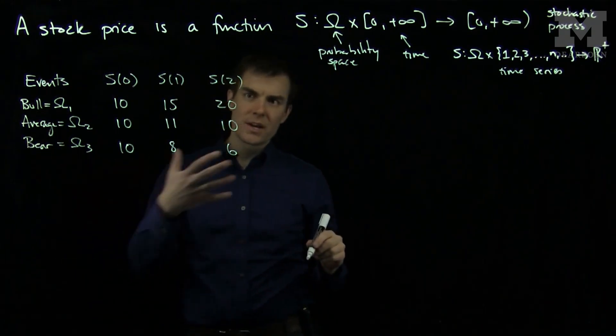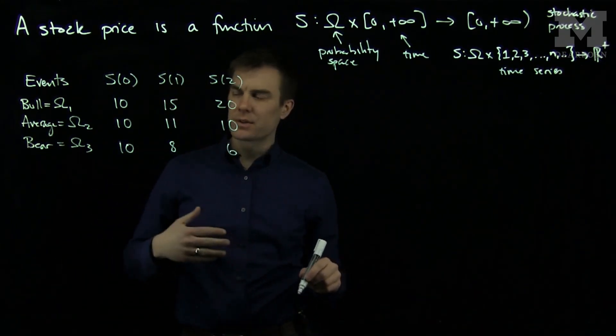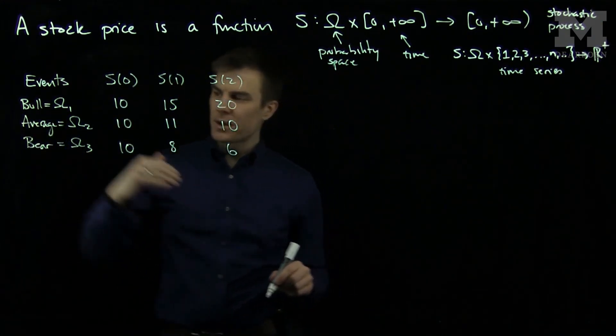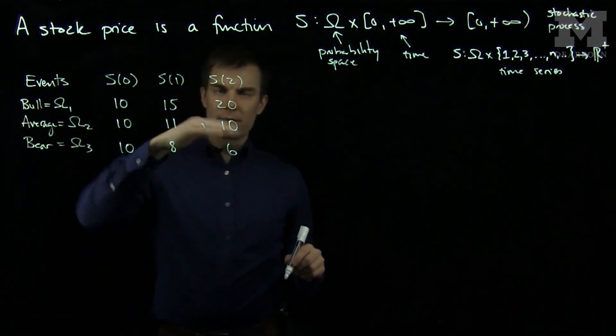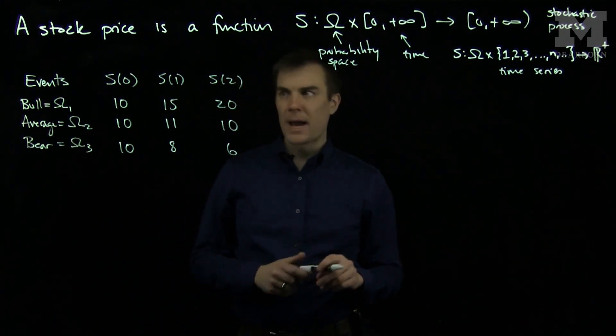So a bull market is where the stock price increases as a function of time typically, with maybe some small decreases or dips. In the average market it's basically very close to initial price. In the bear market is where you have a decrease globally. So now what we can do is we can plot sample paths of these things.